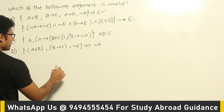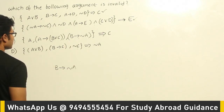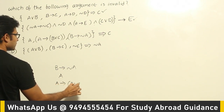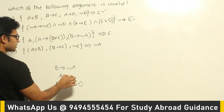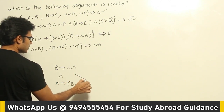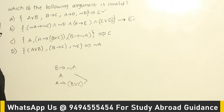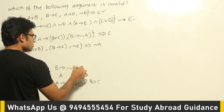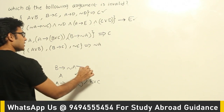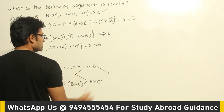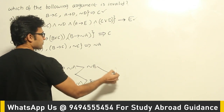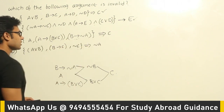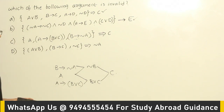The premises are: B implies negation A, A, and A implies B or C. Combining A with A implies B or C by modus ponens gives B or C. Combining A with B implies negation A by modus tollens gives negation B. Then combining B or C with negation B by disjunctive syllogism gives C. So the conclusion C is valid — option C is a valid argument.